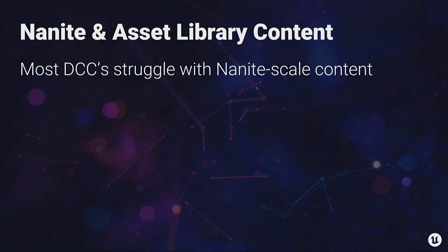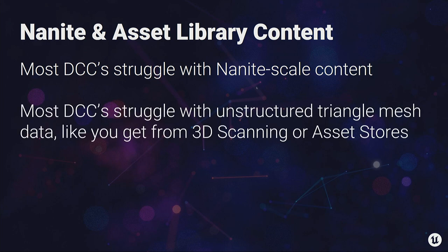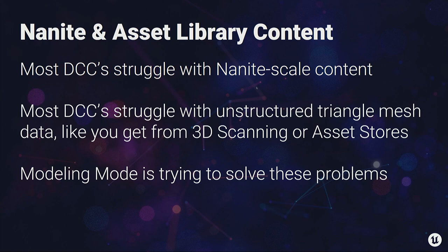The other big reason we had to do this: when you start working with Nanite-scale content, you really struggle with a lot of DCC tools. If you try and bring a two-million-triangle mesh into most DCCs, they don't love it — they're not really designed to work with two-million-triangle raw meshes. They work with two-million-triangle sub-D meshes, which are more efficient, but that's not what you get out of a 3D scanner. Any kind of unstructured triangle mesh data tends to be a struggle in DCC tools. In a real-time engine like Unreal, this is what you have almost all the time, and modeling mode is trying to solve these problems.